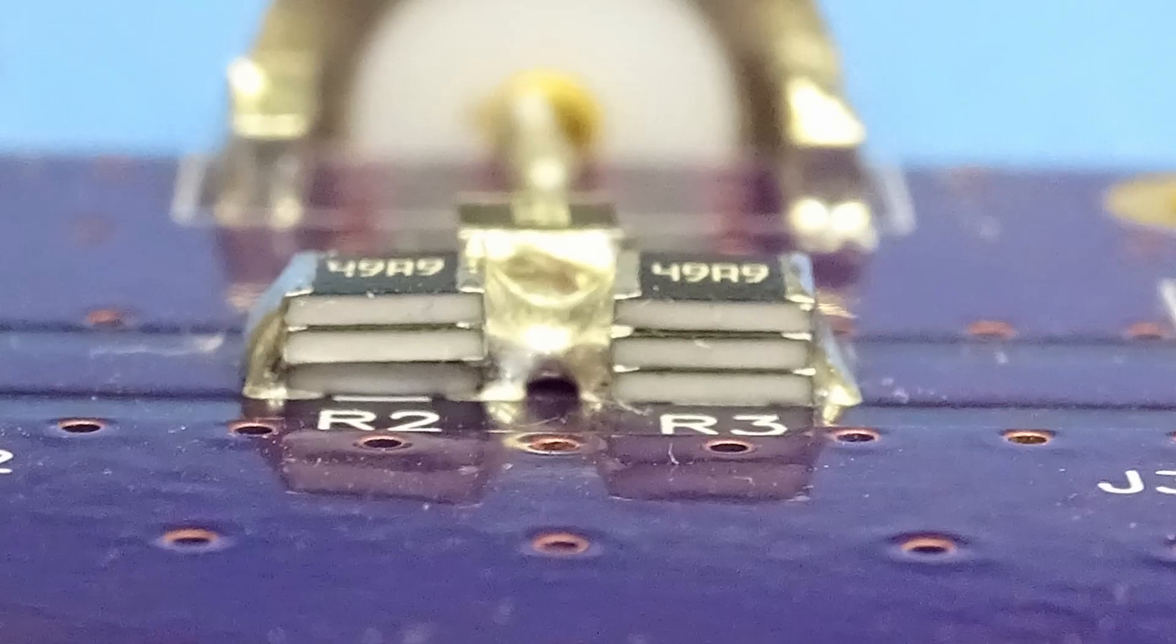Now, one clever ploy that folks use to reduce the inductance associated with a resistor is to put resistors in parallel. The inductance of the overall assembly is significantly lower than a single resistor on its own. So, I decided to use three resistors in parallel, each soldered right on top of the other to create my series resistor. Now, each of these resistors would be 50 ohms.